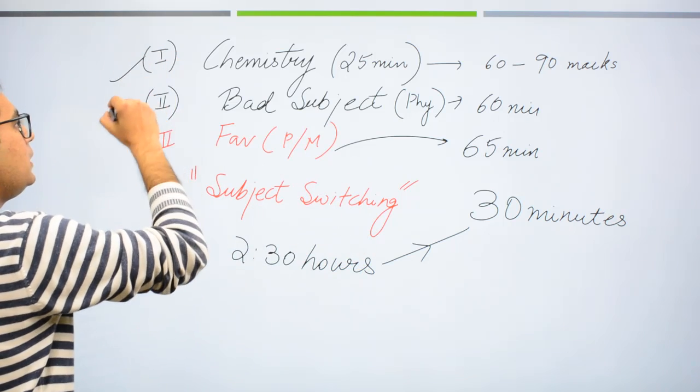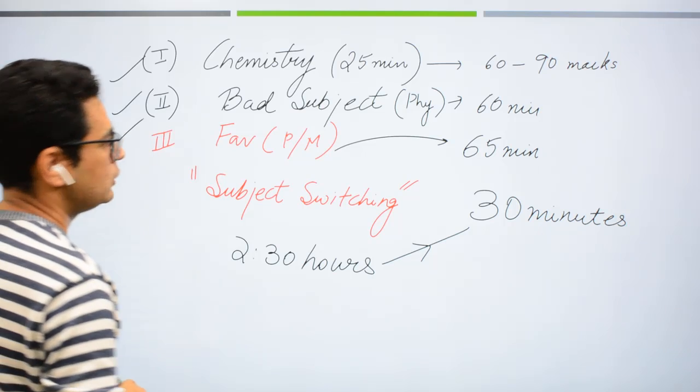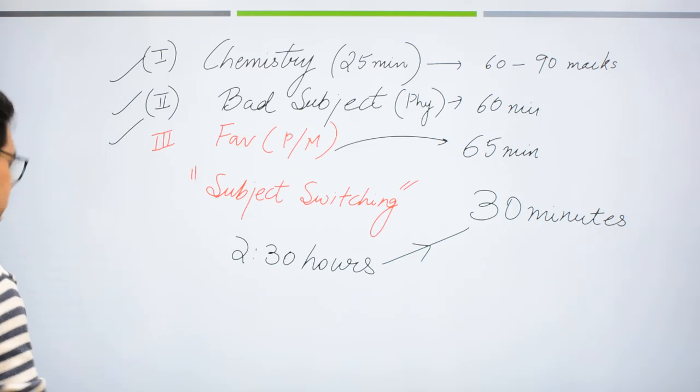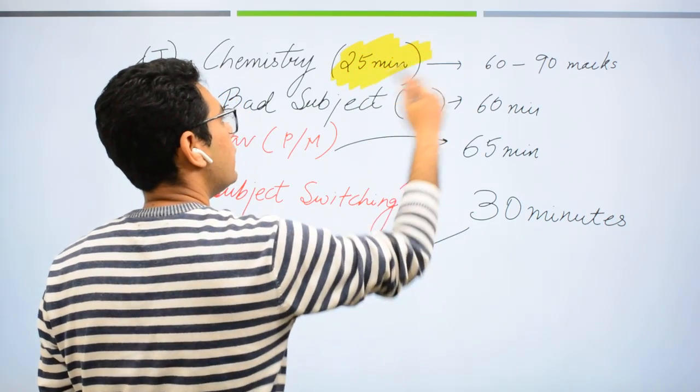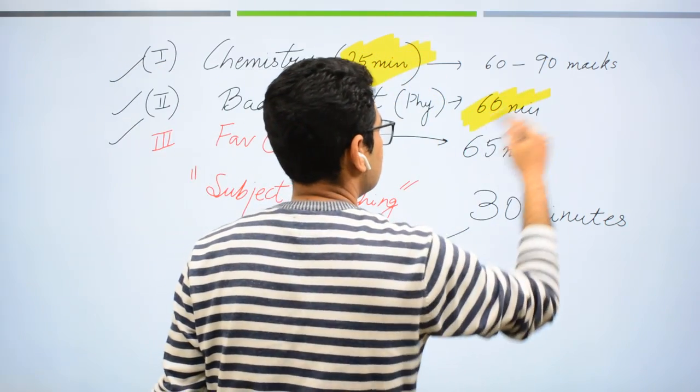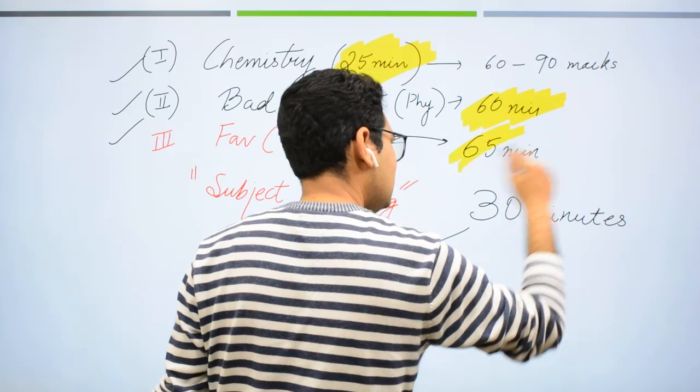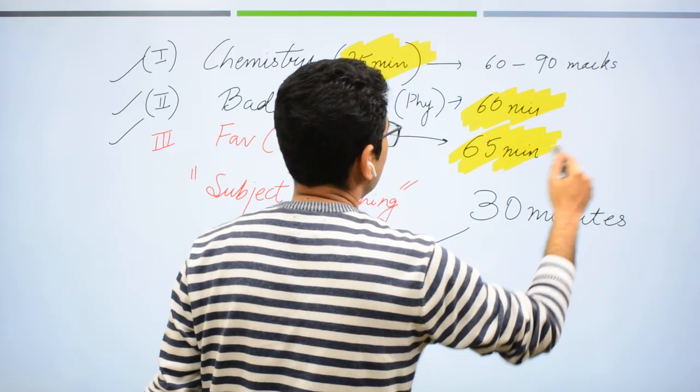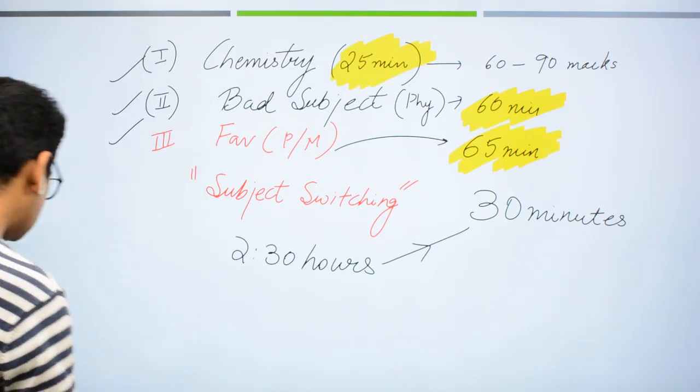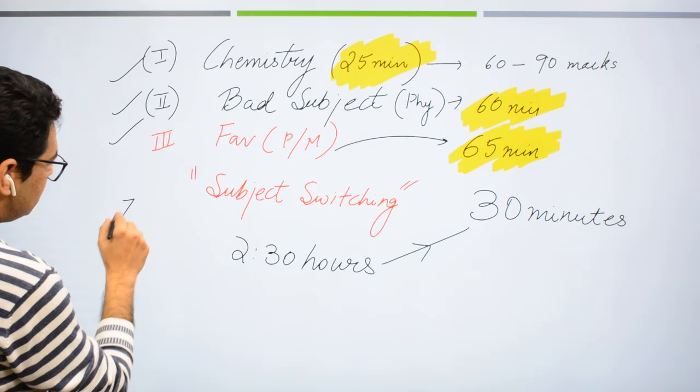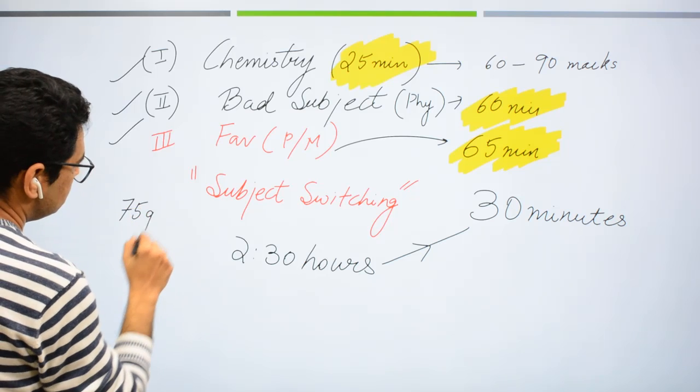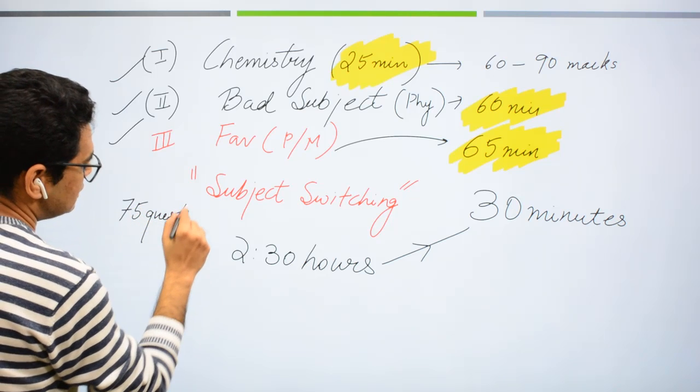Aap order apne marzi se decide kar sakte ho, but mera ek zarur baat maano ki ye jo time limit hai, ye time limit first round of attempt mein ye hi time limit rakhna. Ki maths generally thoda lengthy hi aata hai 65 minutes. Isko aur resolve kar sakte hain hum log, kyunki is bar toh sirf 75 questions hi hain. We just have 75 questions this time round, so ab toh hamare paas ample time hai, ample time.